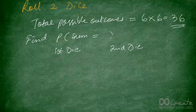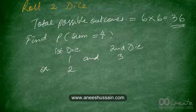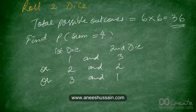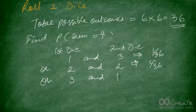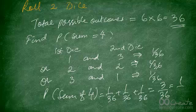Let's try another example. Find the probability of getting a sum of 4. The different ways to get a sum of 4 when you roll 2 dice are: 1 and 3, 2 and 2, or 3 and 1. Each of these outcomes has a probability of 1 out of 36. So the probability of getting a sum of 4 is 1/36 + 1/36 + 1/36 = 3 out of 36, which is 1 out of 12.